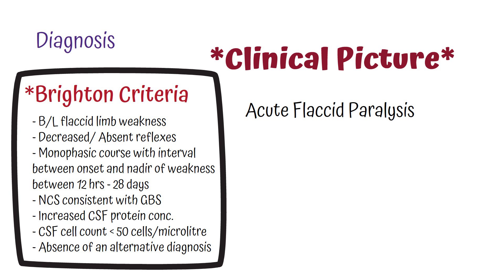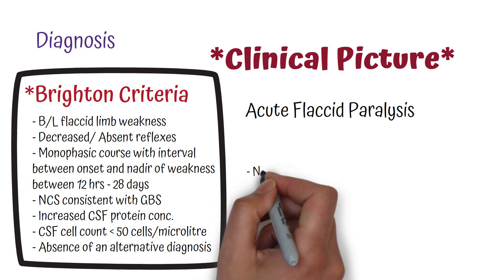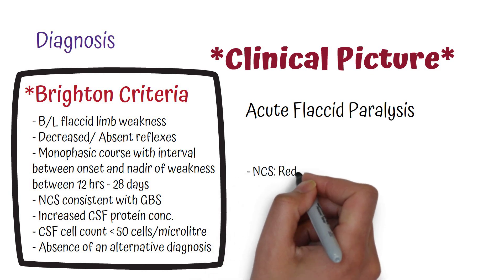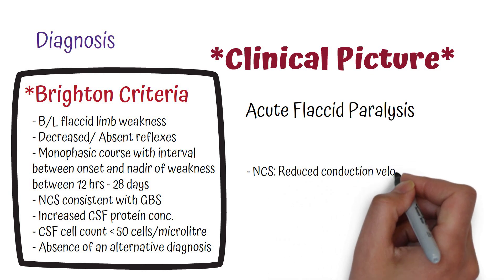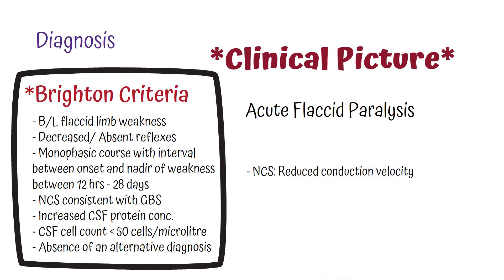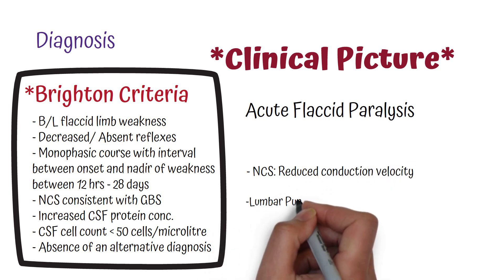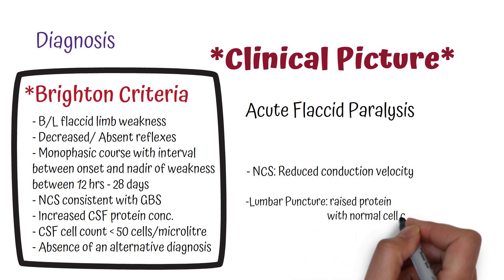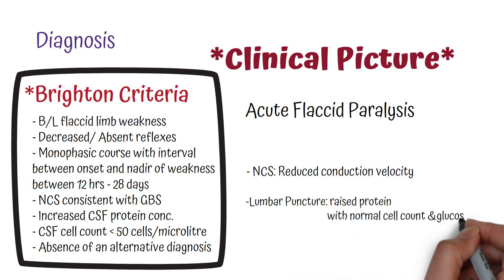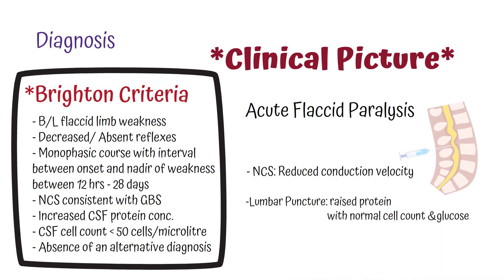The diagnosis can also be supported by other investigations such as a nerve conduction study, which will show reduced conduction velocity due to demyelination, and a lumbar puncture, which will show CSF with a raised protein count but normal cell count and normal glucose.